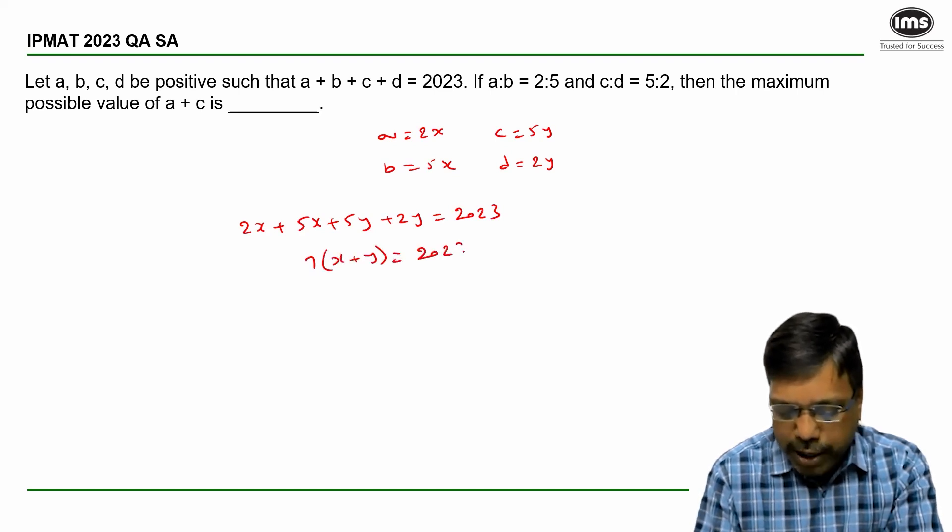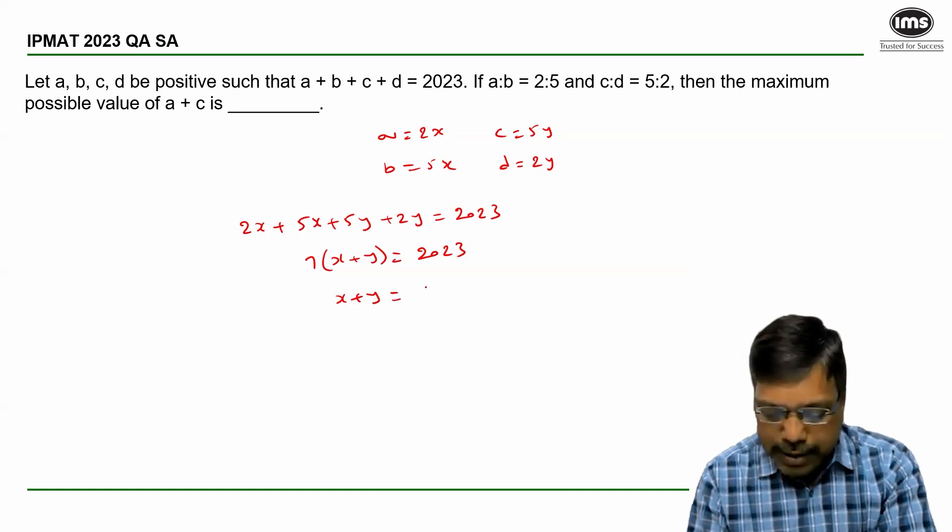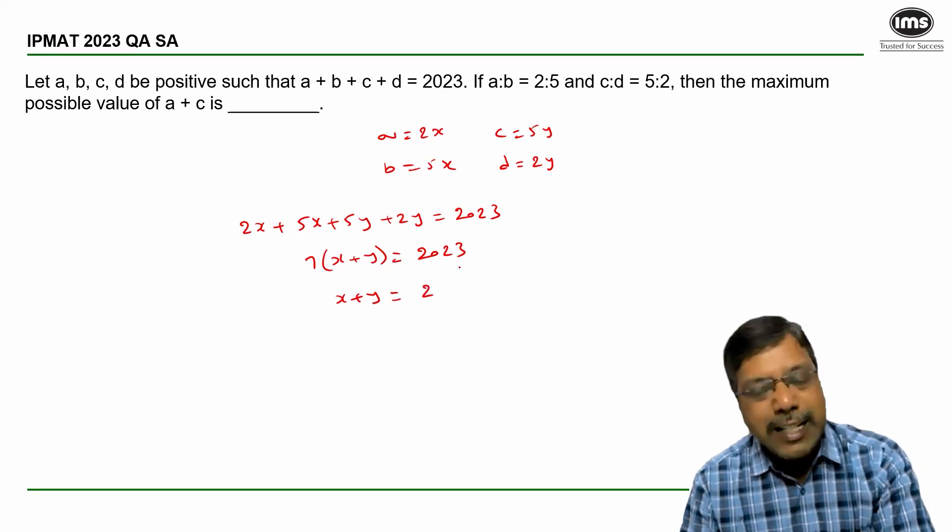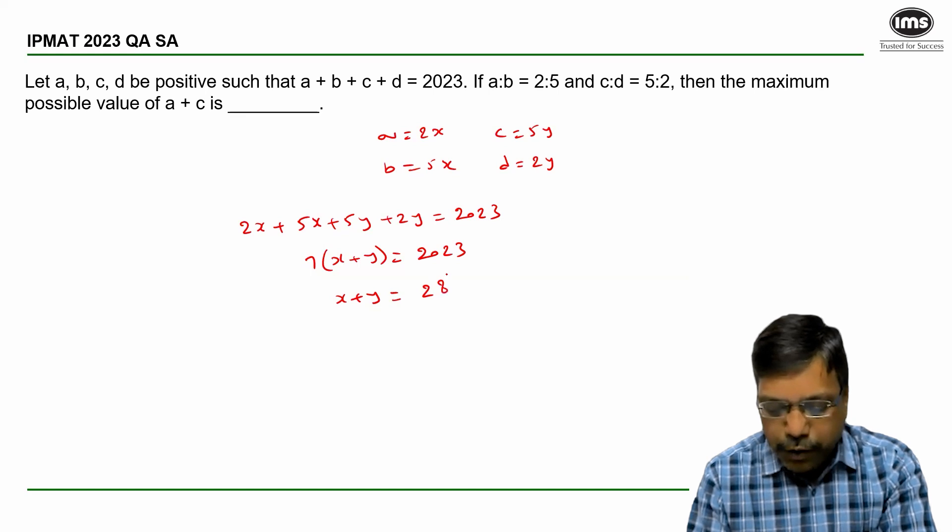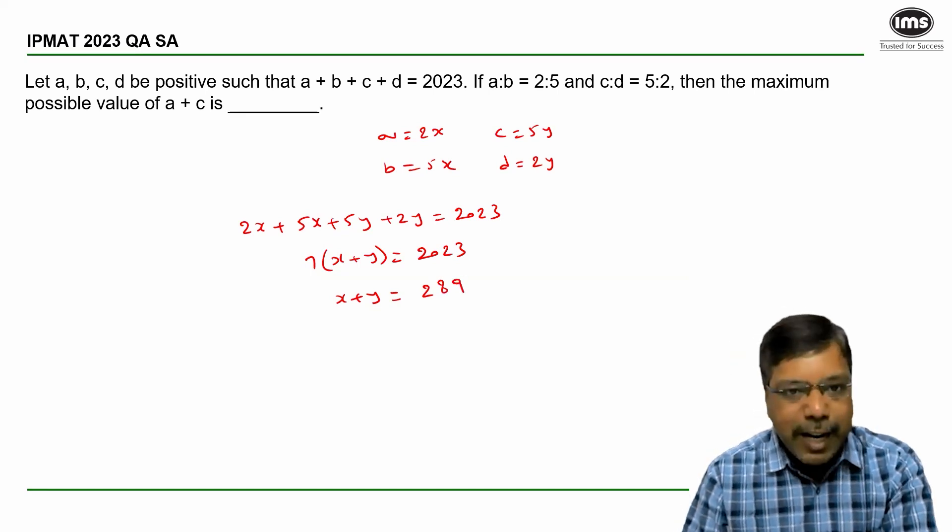So, x plus y is equal to... 7, 2 is 14, then 62, 7, 8 is 56, 63, 9. So, x plus y is 289.